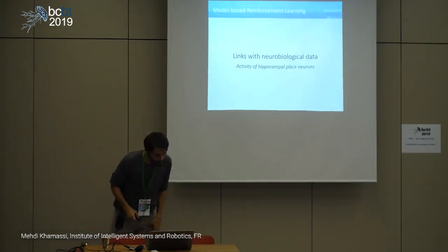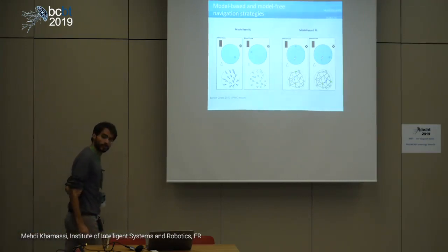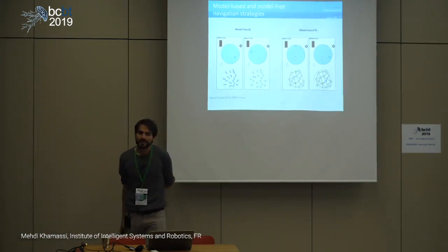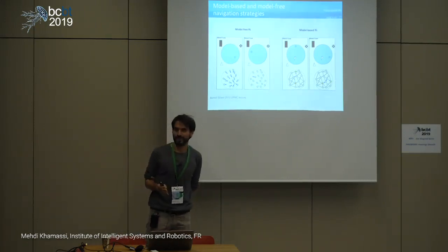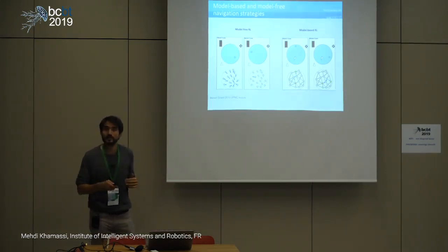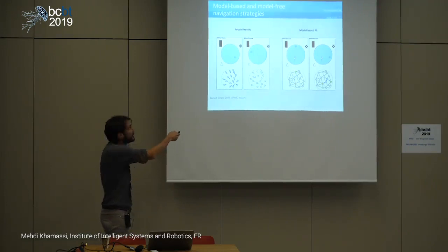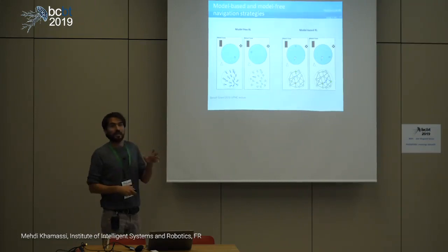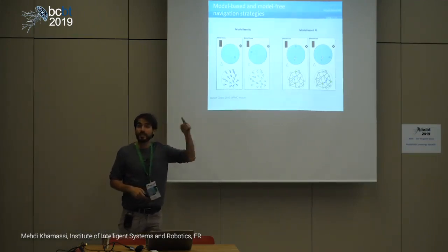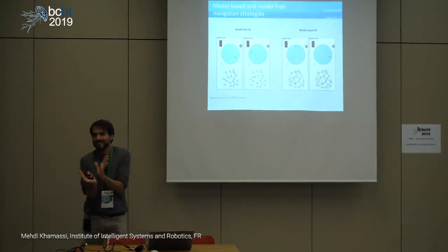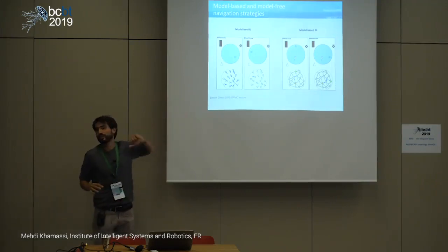The hippocampus could just provide information about your current state, and this strategy is allocentric — states are really allocentrically defined. Sometimes this can be more flexible than model-free egocentric, but you don't have the full flexibility of having a model. You can also do a model-based egocentric strategy. So for me, these dimensions are sort of orthogonal. We predict you should see spatially correlated activity in dorsolateral striatum, but model-free.